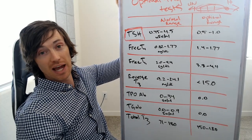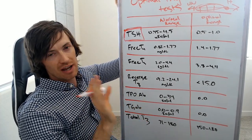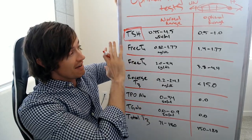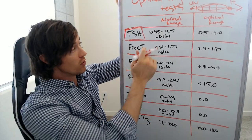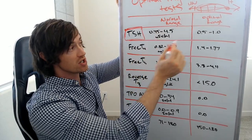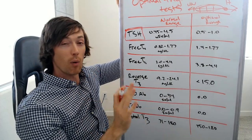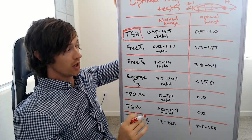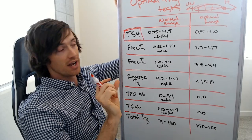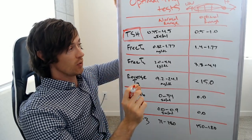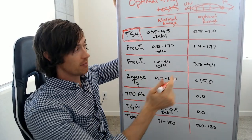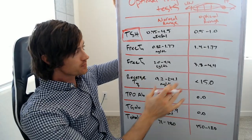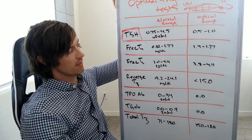We have seven thyroid lab tests that — not necessarily every time you get tested, but certainly the first time — you need to have every single one of these tested. And don't just look at these normal ranges; look at them through the optimal range. What I've done here is I've already done the calculations for you, so you can put your own thyroid lab test in here and see where you fit on this spectrum. Are you normal? Are you optimal?